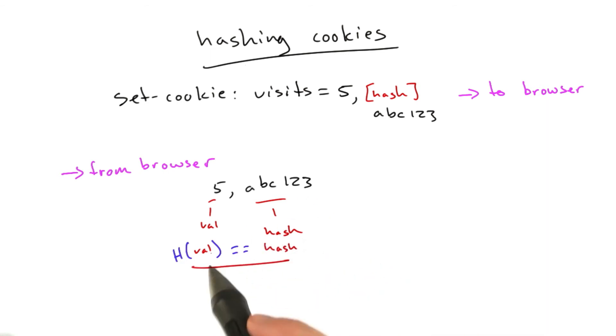And if it does, we know this value hasn't been tampered with. And if it doesn't, we know the cookie's invalid and we can throw it out. So our code's going to look something like this.